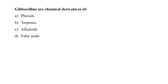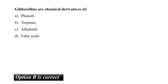The next question is: gibberellins are the chemical derivatives of? Gibberellins are hormones found in plants as well as fungi. They are diterpene plant hormones from geranylgeranyl diphosphate, which is a common C20 precursor for diterpenoids. Gibberellins are synthesized via the terpenoid pathway in the plastids, then modified in the endoplasmic reticulum and cytoplasm. So our correct option is B, that is terpenes.